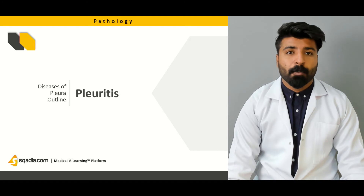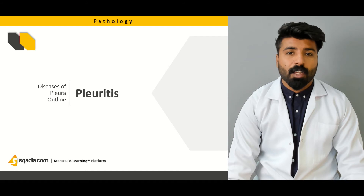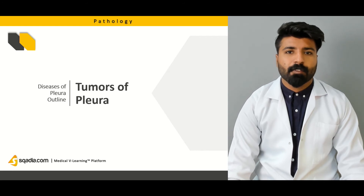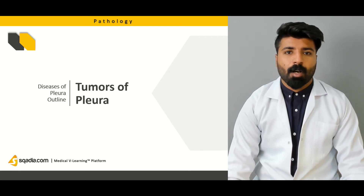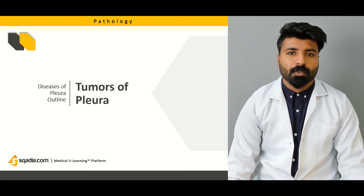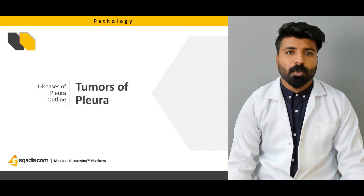Then we're going to talk about Pleuritis — what Pleuritis is, how the patient presents to us, and what the presenting complaint is. Next, we have Tumors of the Pleura. We're going to discuss what happens if the Pleura is affected by tumors, or even by malignancy from other tissue spreading to the Pleura.